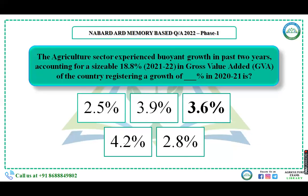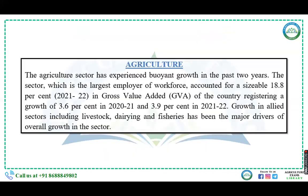The next question: the agriculture sector experienced buoyant growth in the past two years, accounting for a sizable 18.8 percent in GVA of the country in 2021-22, registering a growth of dash percent in 2021. The options were 2.5%, 3.9%, 3.6%, 4.2%, and 2.8%. The right answer is 3.6 percent, as the sector registered 3.6% growth in 2021 and 3.9% in 2021-22.